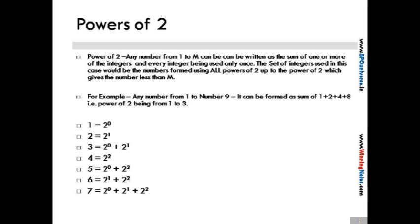Now we know that any number from 1 to M can be written as a sum of the various powers of 2, and these powers being the integers, hence the case would be the numbers formed using all powers of 2 to the power of 2 which gives the number itself from M.